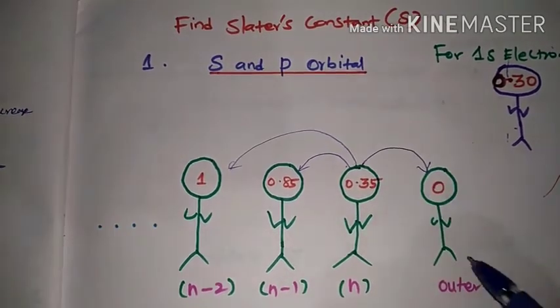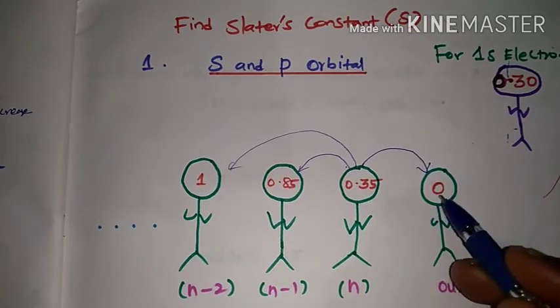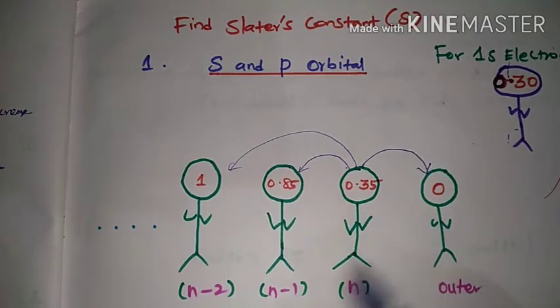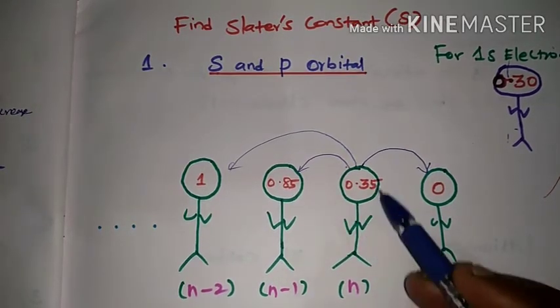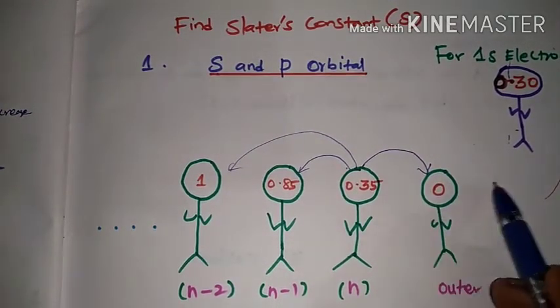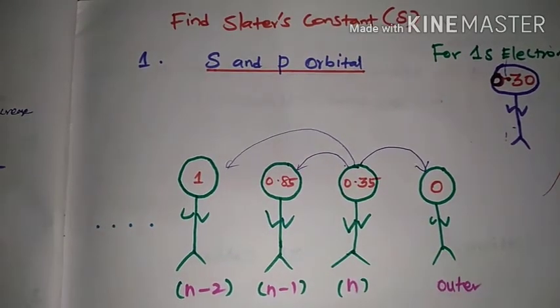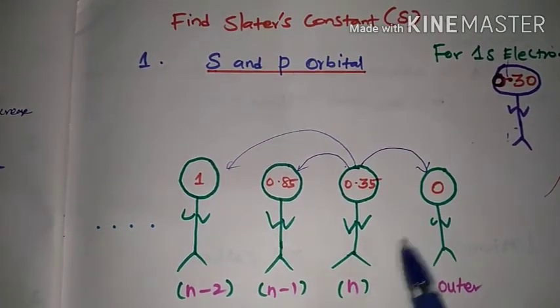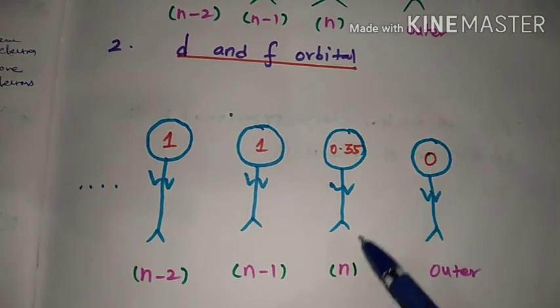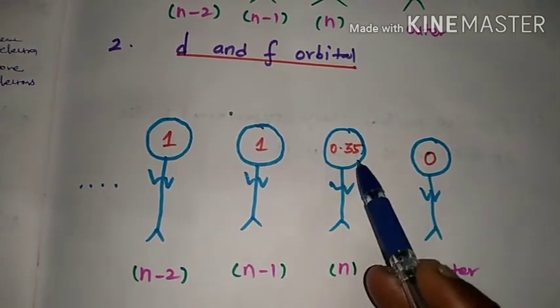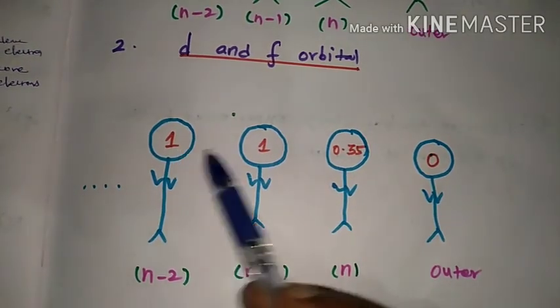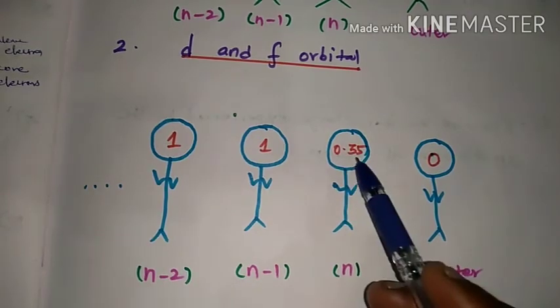Outside orbitals have no contribution, so the value is 0. For sp type, if you choose n, the value is 0.35; n-1 is 0.85. For df type, if you choose n, the value is 0.35; n-1 and n-2 are both 1. It's very easy: choose the orbital, then apply 0.35, 0.85, or 1 as appropriate.